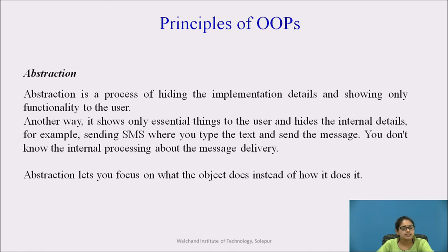Next is abstraction. Abstraction is the process of hiding implementation details and only showing the functionality to users. For example, if you want to send an SMS, you just type the message and the number — you are not bothered about the internal process of message delivery. Abstraction lets you know what the object does instead of how it does it.